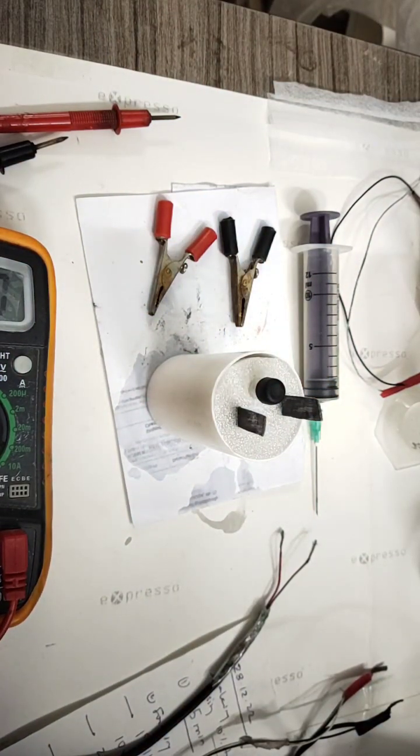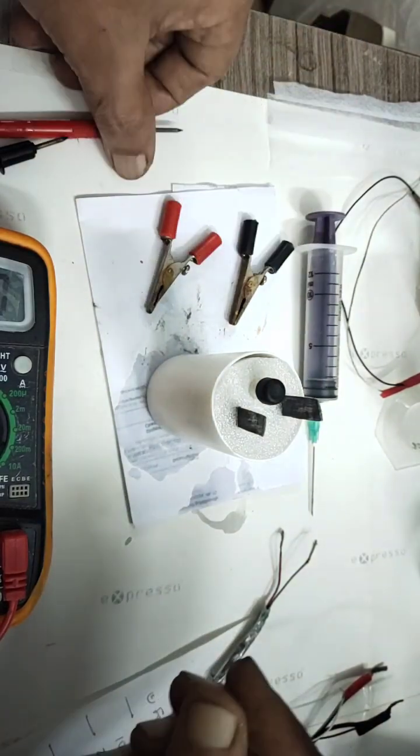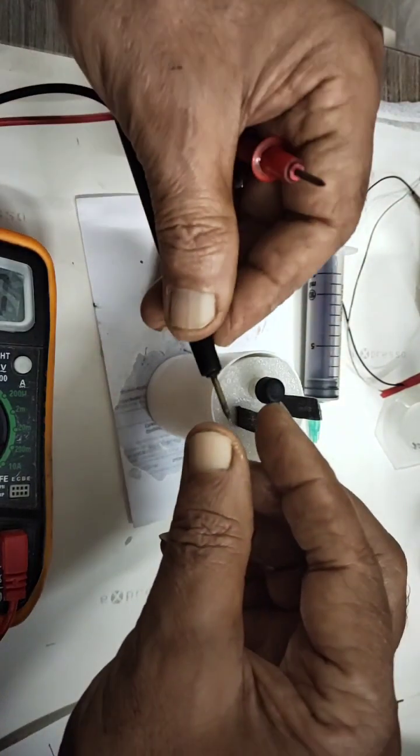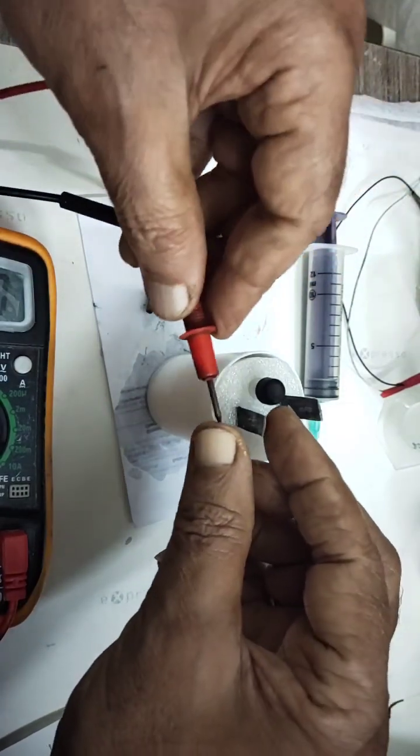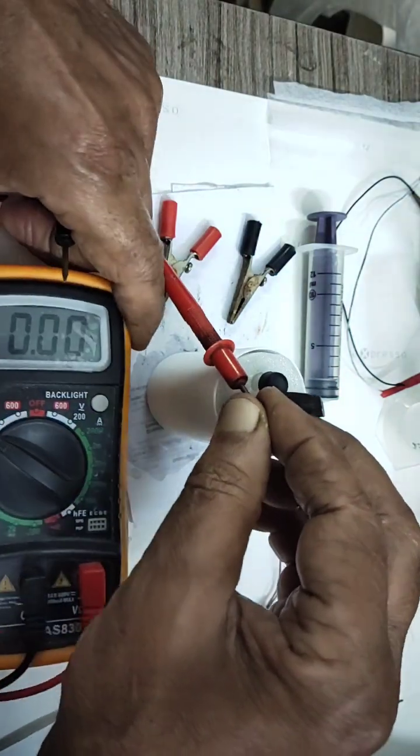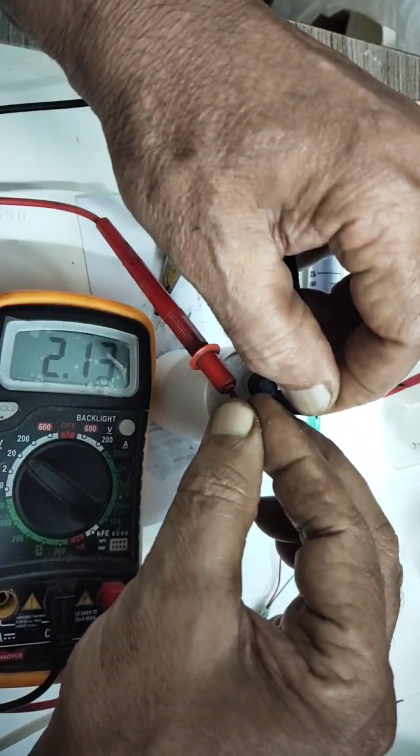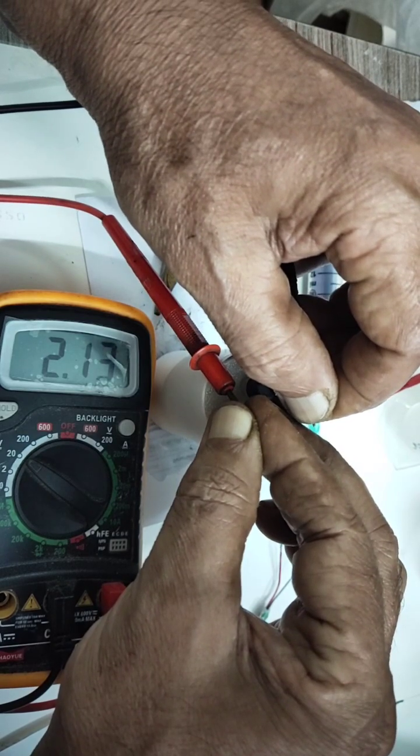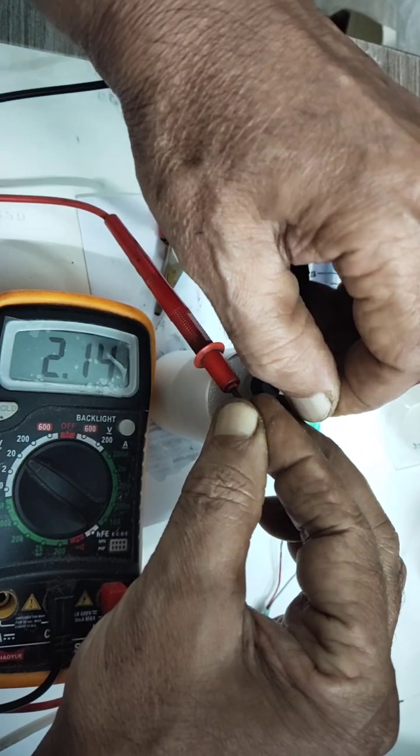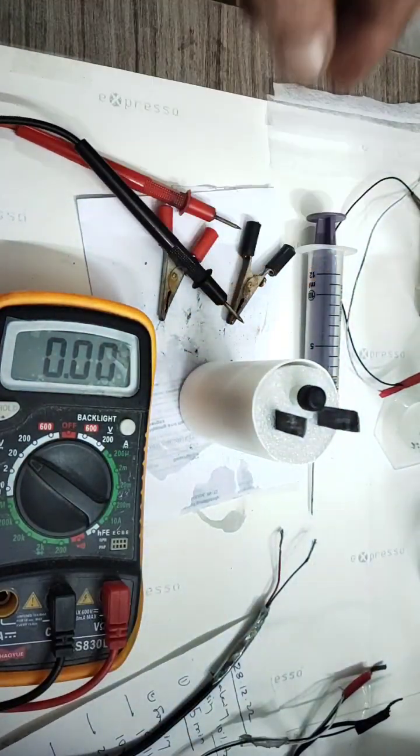This is the final session, the battery is ready now. We can test the voltage also. This will be the positive end and this will be the negative end. I will show you what the voltage is. 2.13, 2.14, so nearly it is good. Yes, it has been fully charged.